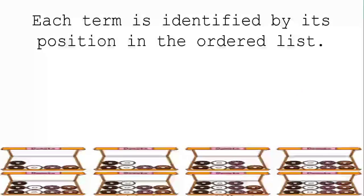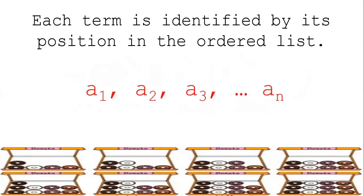Each term is identified by its position in the ordered list. As we said, a sequence is an ordered list of numbers. Therefore, terms must also be positioned according to their order. These are represented by a sub 1, a sub 2, a sub 3, and so on until we reach a sub n.